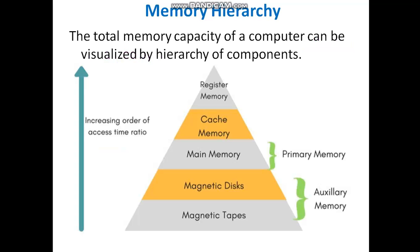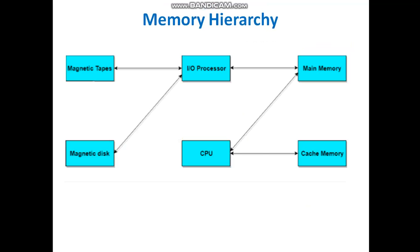Auxiliary memory — magnetic disks and magnetic tapes — can be called secondary memory or auxiliary memory. These are added memory, like memory cards in the case of a smartphone, whereas in the case of a processor it will be magnetic disks and magnetic tapes. These memories will be communicated only through the main memory, so there will be some I/O processor. Through that I/O processor, the main memory can access the magnetic tapes and magnetic disks. There is no direct way — only indirectly through main memory.